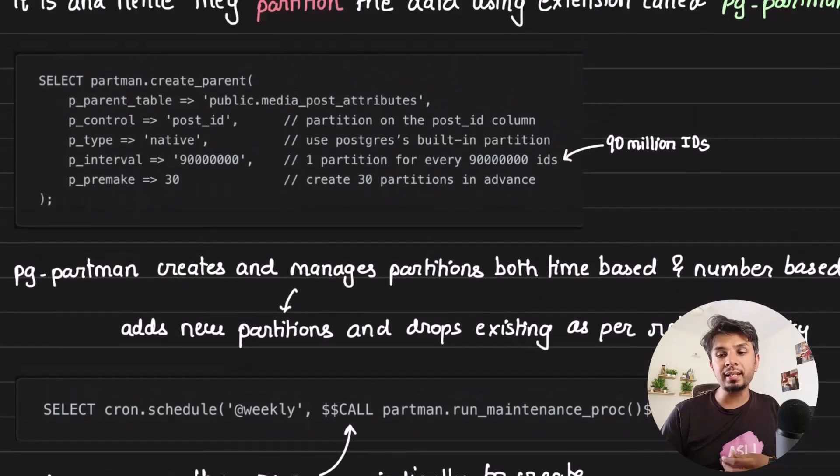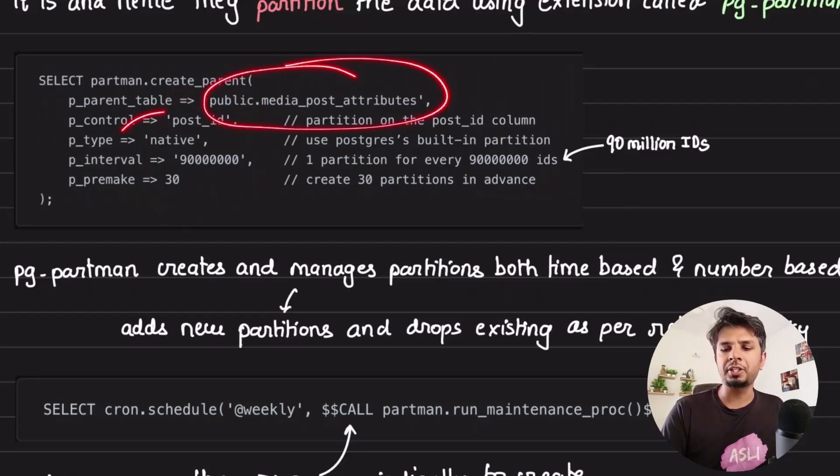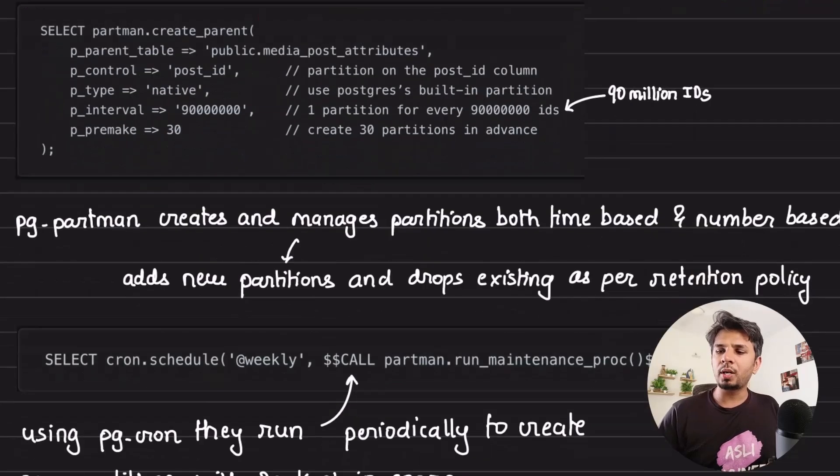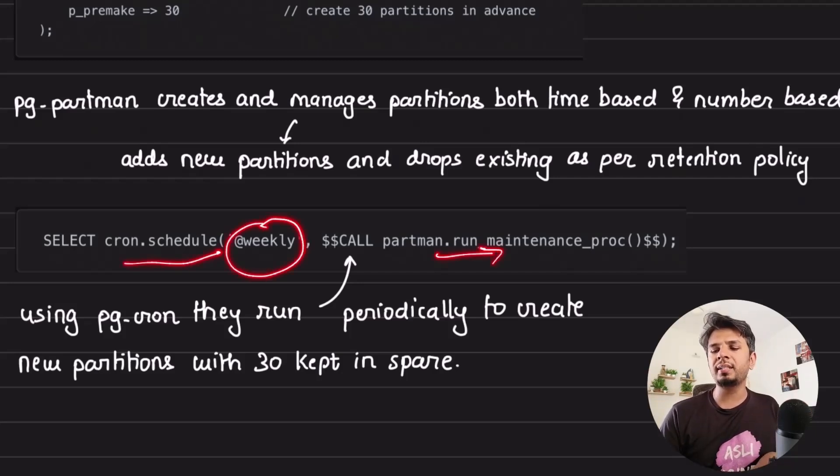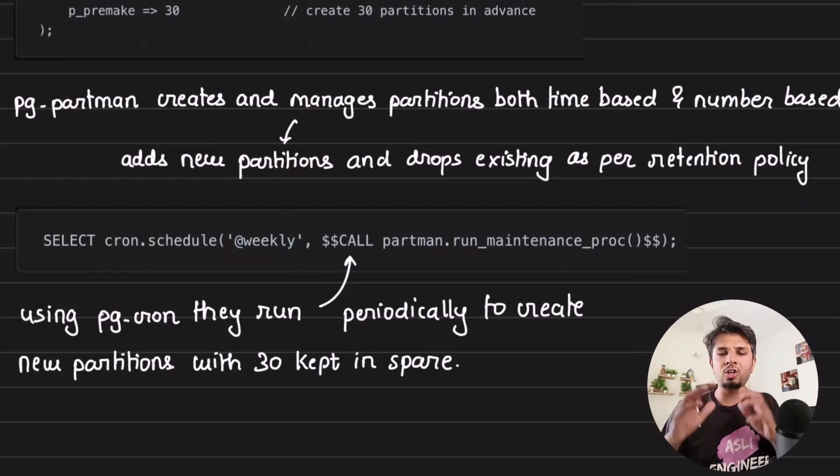It gives you a very simple declarative way to configure your partition management policy. For example, you just need to specify which table to partition, how you need to partition, when you want to trigger the partition. Simple. What they did is they defined this as their partitioning strategy and defined a cron schedule that runs every week that just invokes the method. This way, the partman takes care of creating and managing partitions and dropping them as per the retention policy.